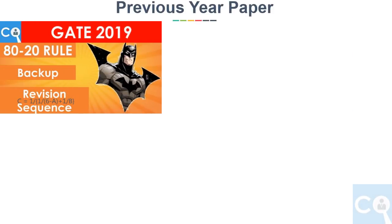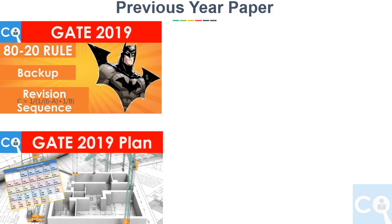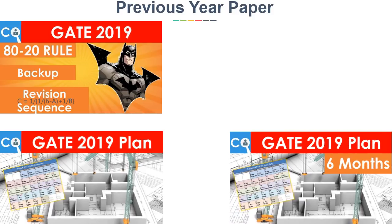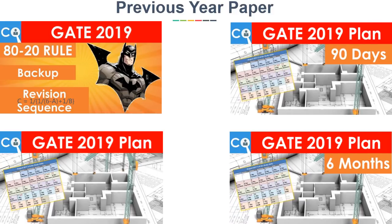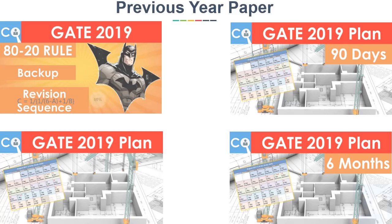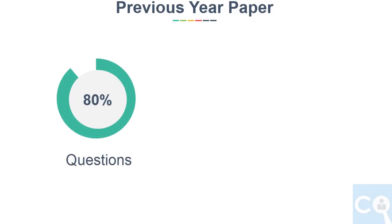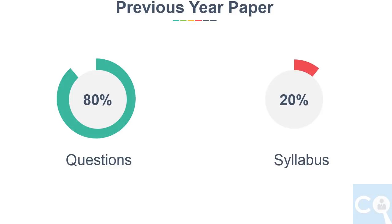If you have seen my old videos on the Batman plan for 1 year, 6 months, and 90 days plan, we have derived all important topics by considering the 80-20 rule, which says 80% of questions will come from 20% of the syllabus. But for the conservative side, we took plus-minus 10%, meaning 70% of questions will come from 30% of the syllabus.